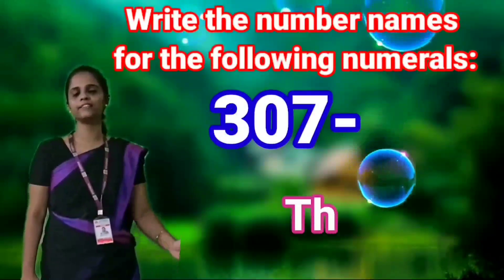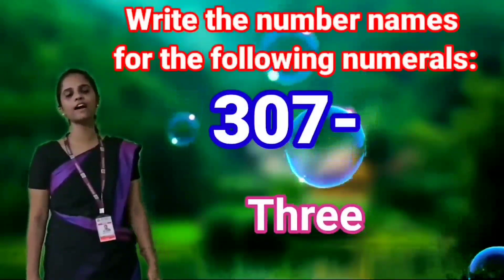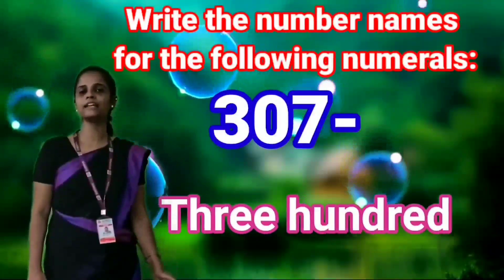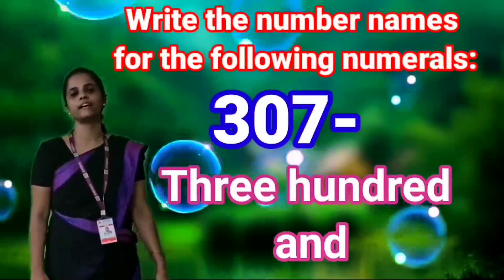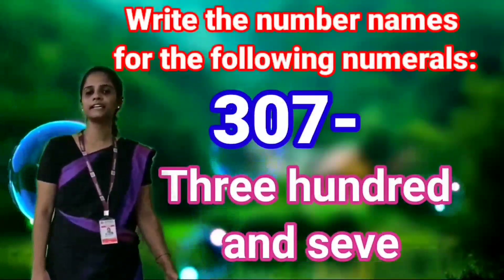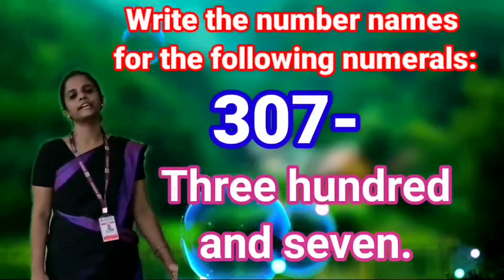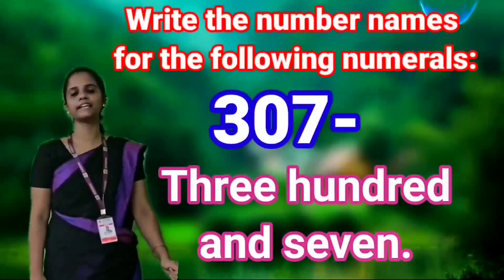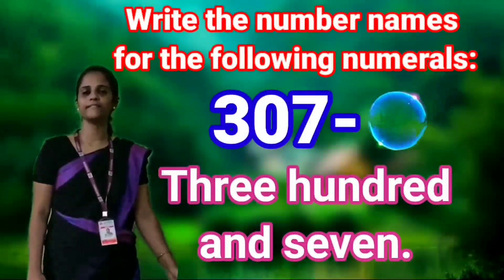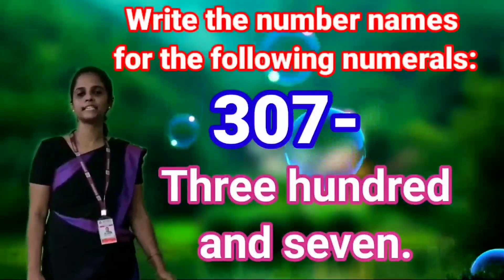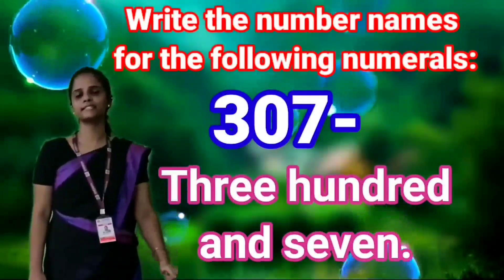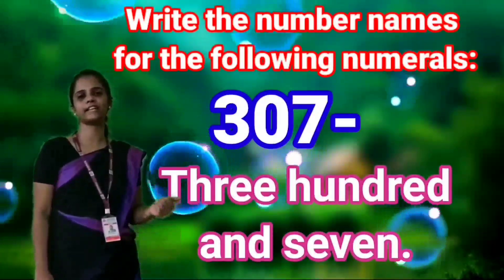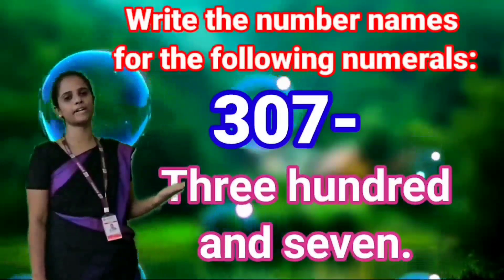F-O-R-T-Y, forty. F-I-V-E, five. The next one: three hundred and seven. T-H-R-E-E, three. H-U-N-D-R-E-D, hundred. A-N-D, and. S-E-V-E-N, seven. So the number is three hundred and seven. This is write the number names.